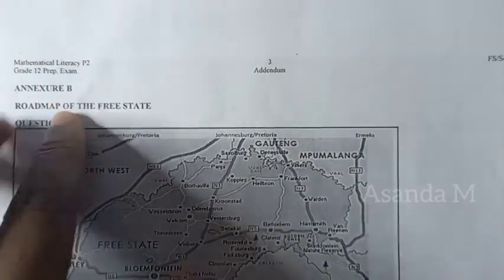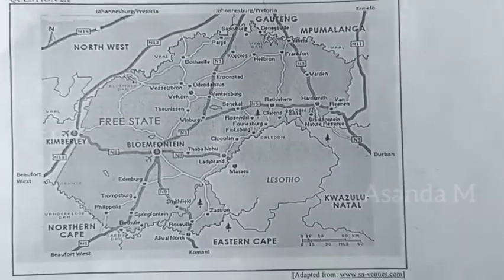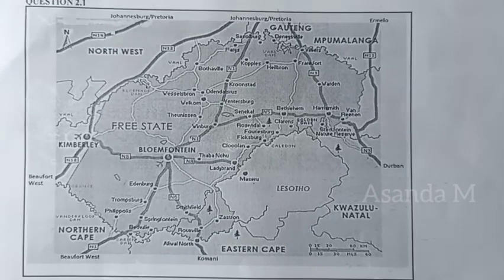And there is my Annexure P. I have to double check — it says Annexure P, road map of Free State, question 2.1. And there is the map itself.